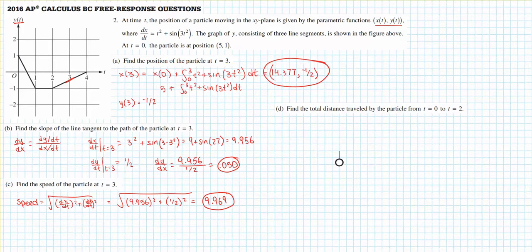Finally, for part d, you're supposed to find the total distance traveled by the particle from t equals 0 to t equals 2. An easy way to think about the total distance is just the arc length, because we know this parametric equation is going to be happening on the xy plane. The total distance traveled, using the arc length formula, is the integral from 0 to 2 of the square root of dx dt squared plus dy dt squared, and then all of this dt.